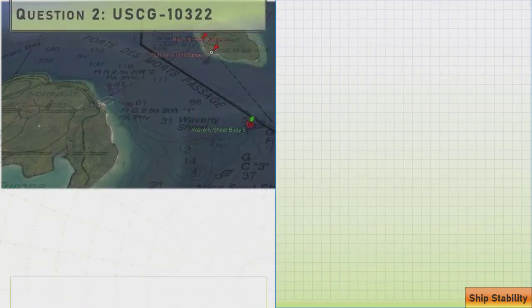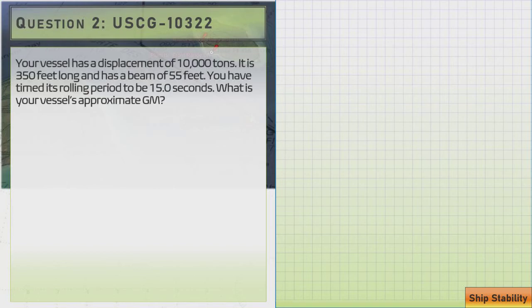So question two here is from US Coast Guard USCG-10322. Your vessel has a displacement of 10,000 tons, it is 350 feet long and has a beam of 55 feet. You have timed its rolling period to be 15.0 seconds. What is your vessel's approximate GM?